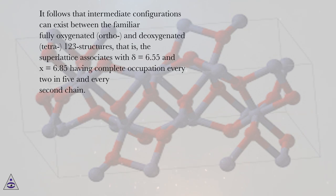It follows that intermediate configurations can exist between the familiar fully oxygenated, ortho, and deoxygenated, tetra, 123 structures.